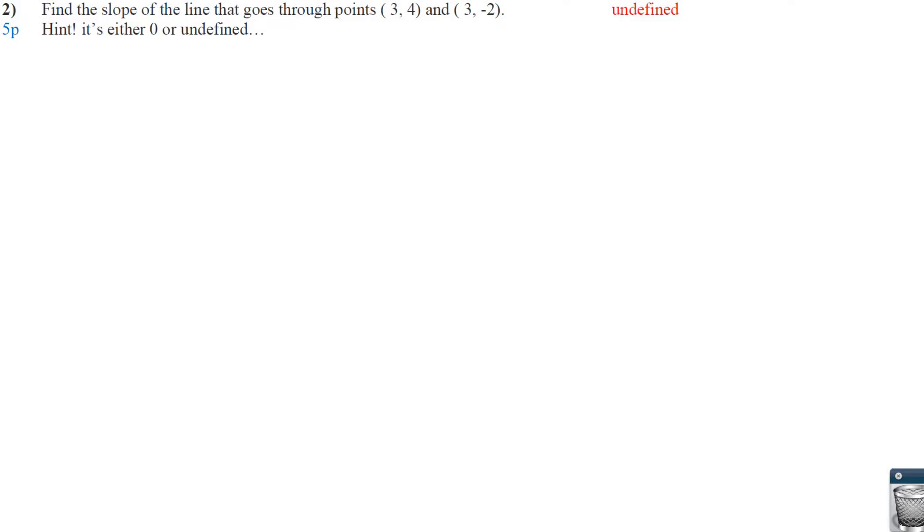So we want to find the slope of the line that goes to these points. So we do the change of y over the change in x. So we get 4 minus negative 2 and 3 minus 3. So here I end up with 6 over 0. And since the 0 is on the bottom, that's not okay. It's undefined.